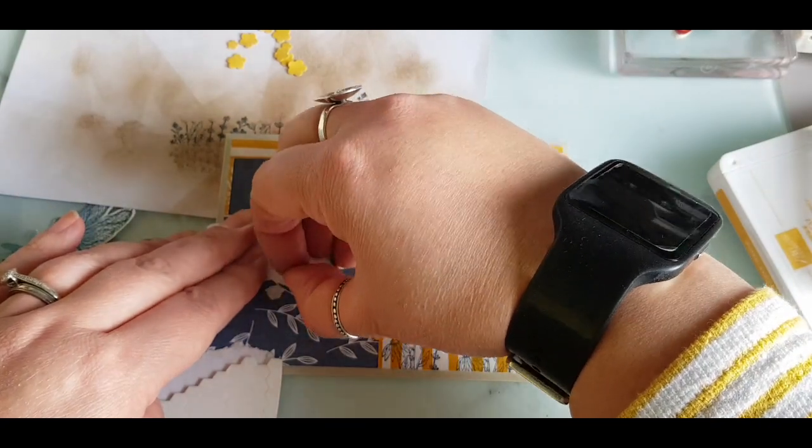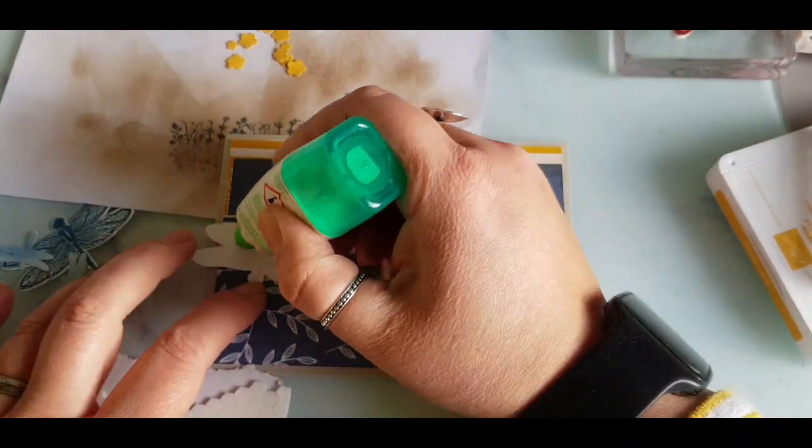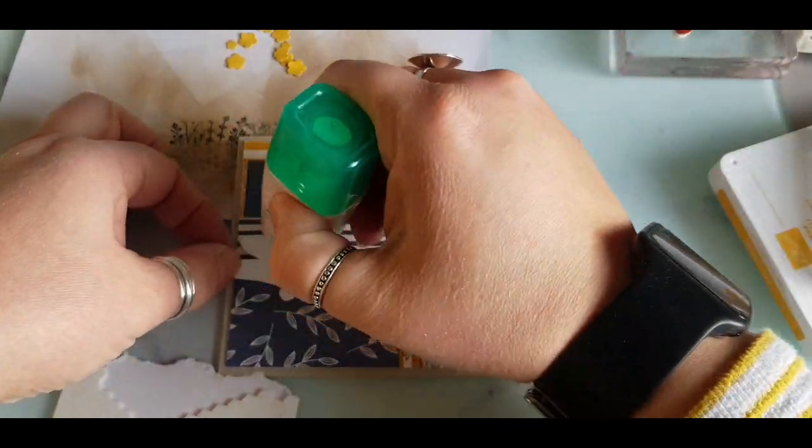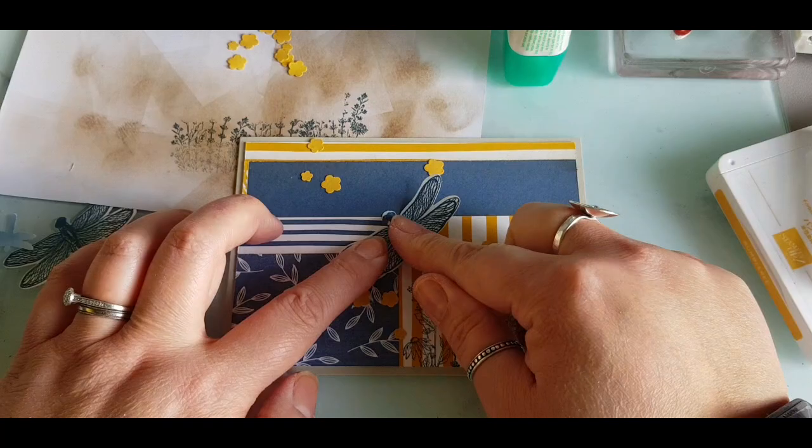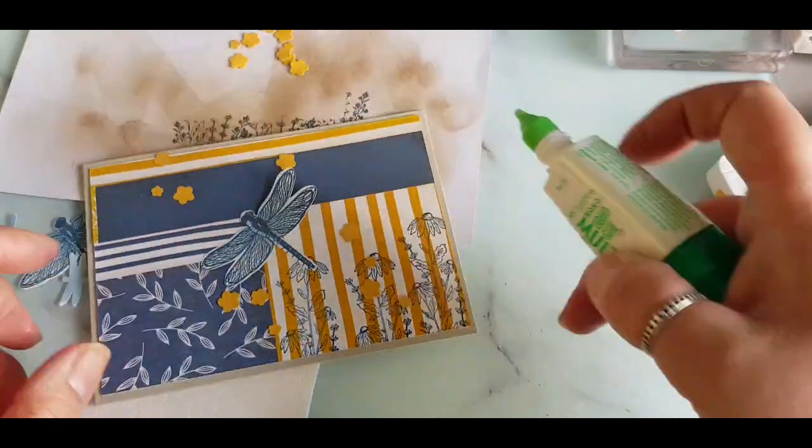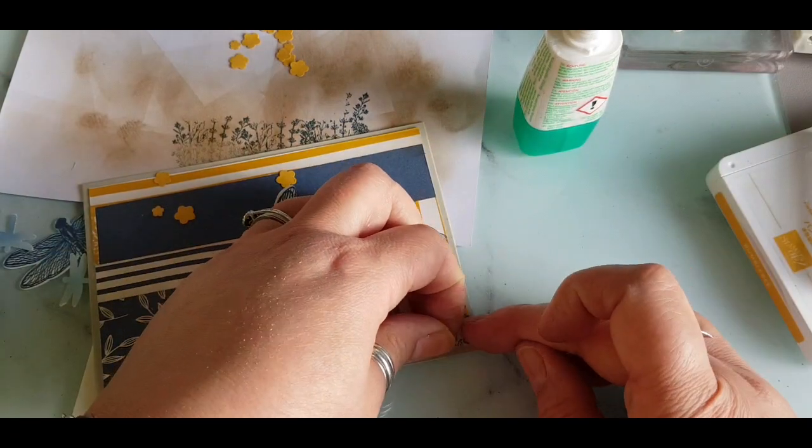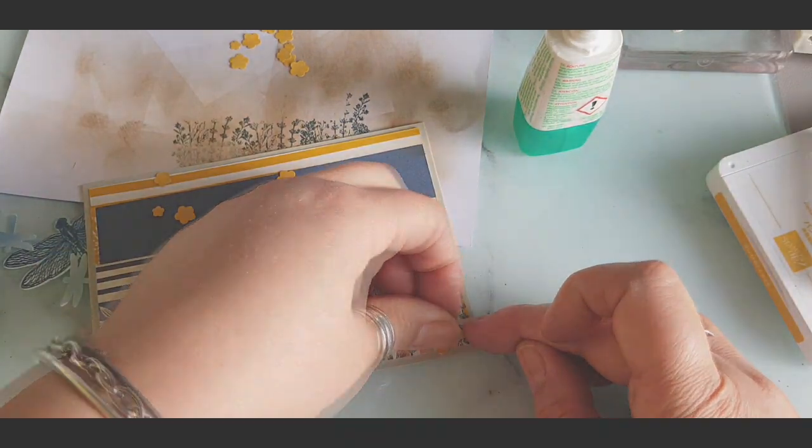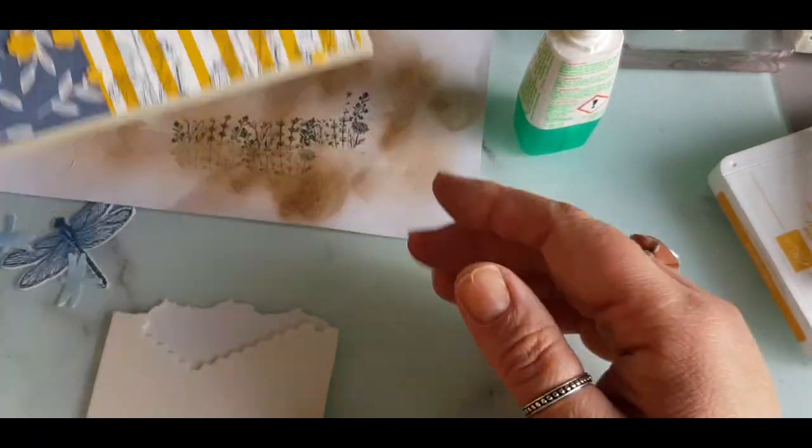The dragonfly wings have been popped up on one side with these mini dimensionals and then for the rest of the body I'm just going to go ahead and use some glue to stick it down into place. Just going to add one little flower at the end here just to complete that look of the flowers coming off the card and there's our first card finished.